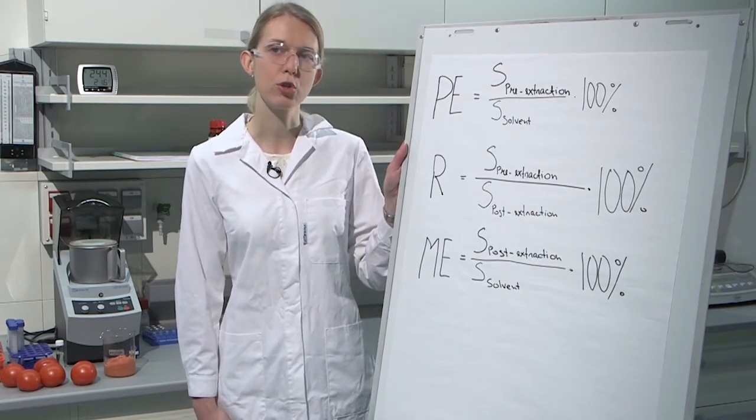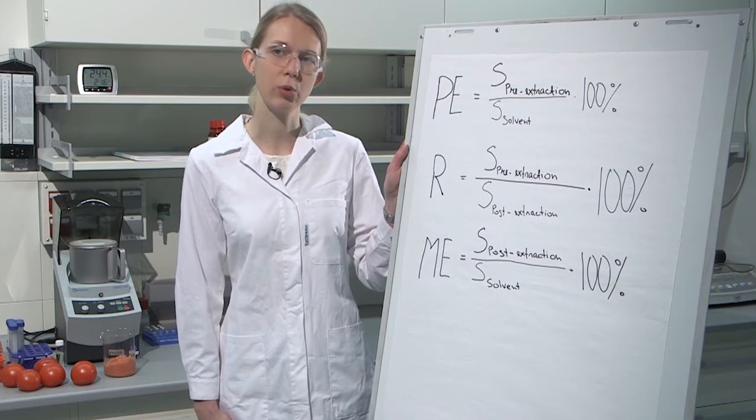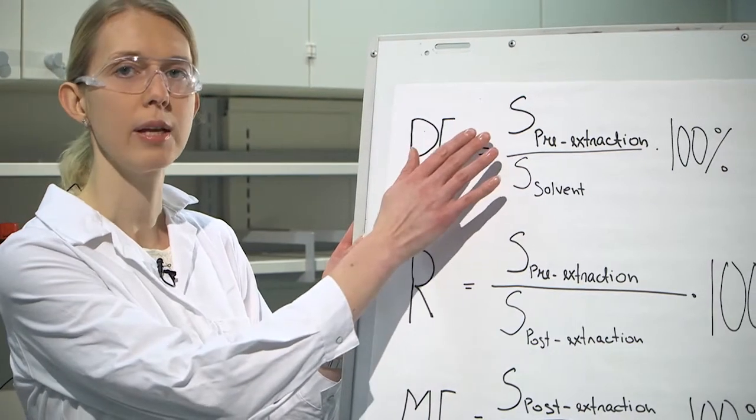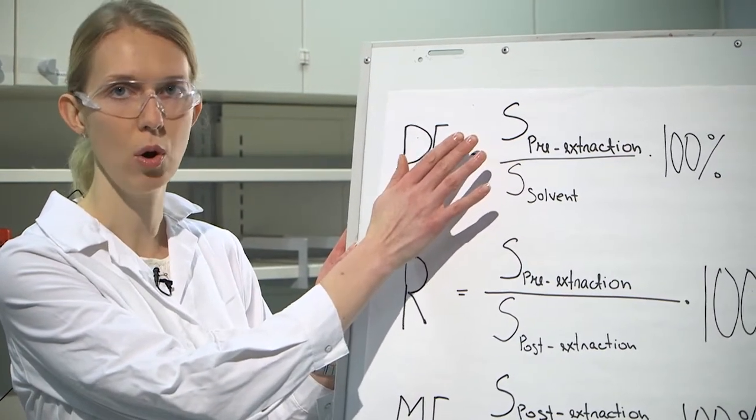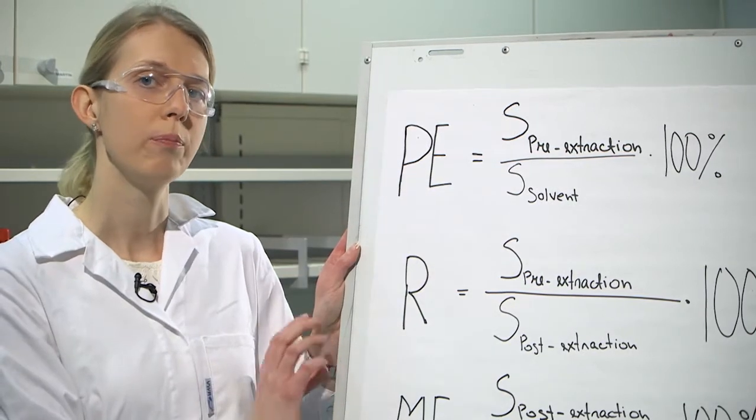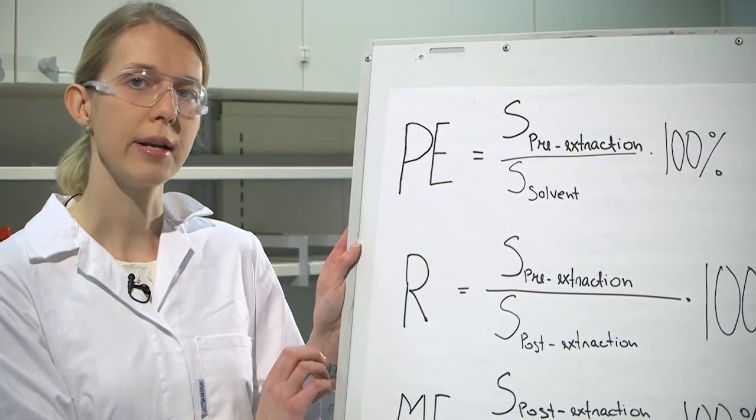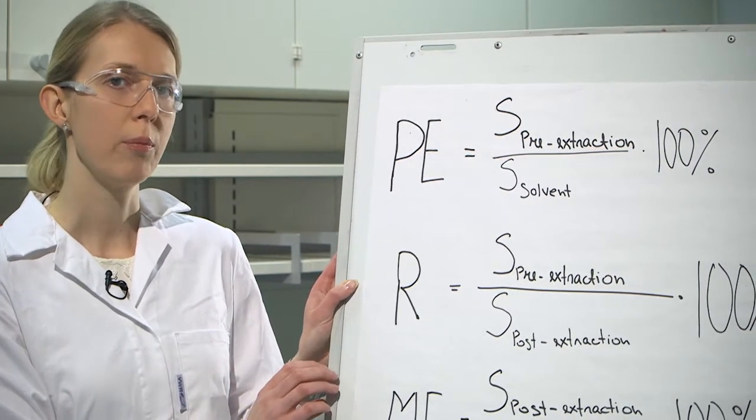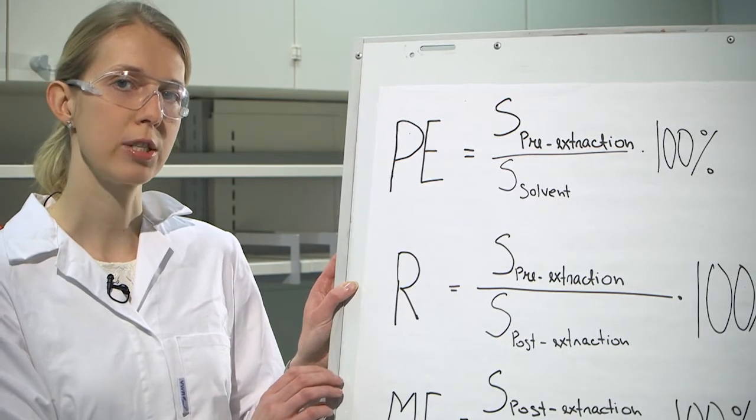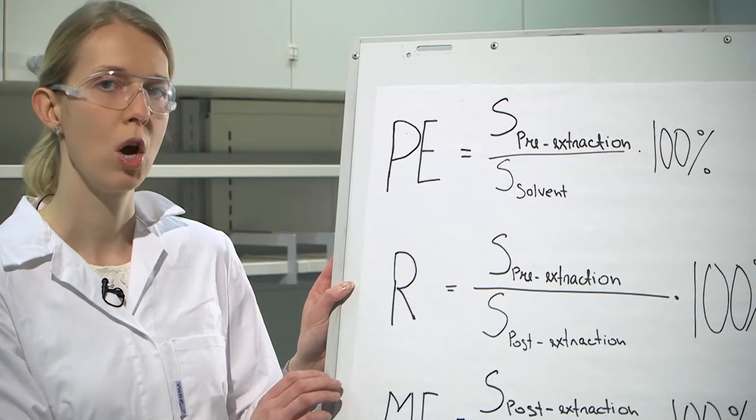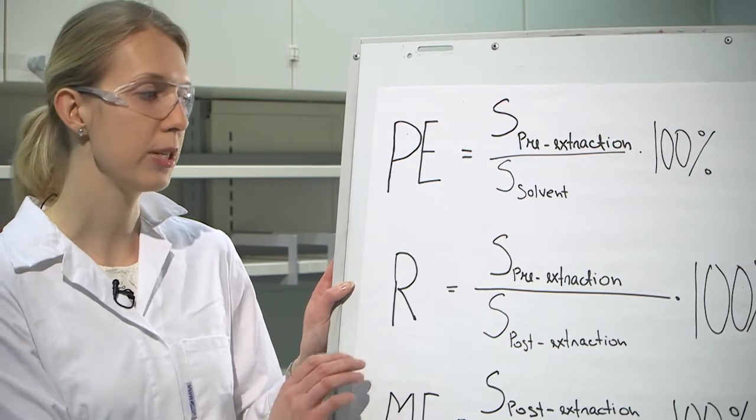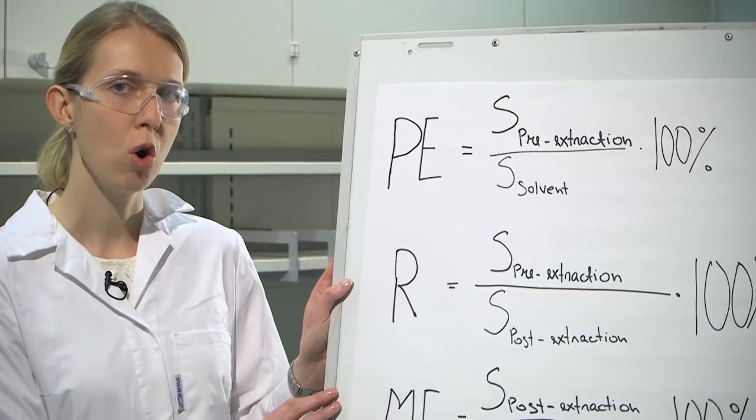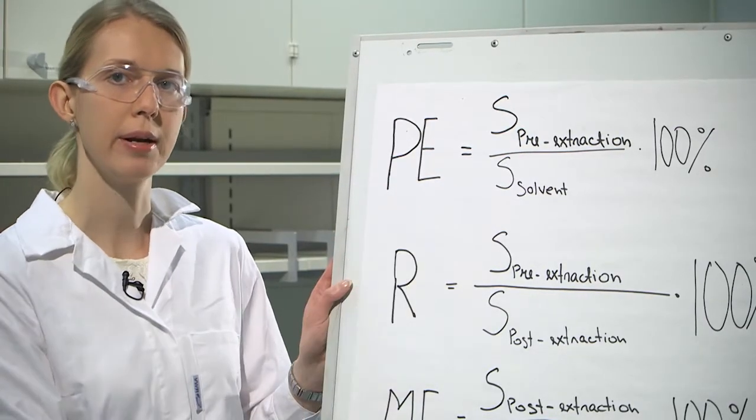We can see that to evaluate all these three parameters we need three kinds of samples. We need the samples that have been spiked with our analyte thiabendazole before we have started the sample preparation. We also need the samples where the blank tomato has been extracted and this extract has been spiked with thiabendazole. This means the post-extraction samples, and also we need the standards that have been prepared in the solvent.